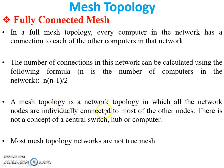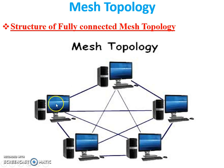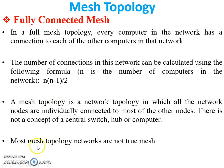In a mesh topology network, all network nodes are individually connected to most of the other nodes. There is no concept of a central switch, hub, or computer — all PCs are connected with a dedicated line and no central device is required. Most mesh topology networks are not true mesh because, practically, a fully connected mesh topology is very difficult to create.